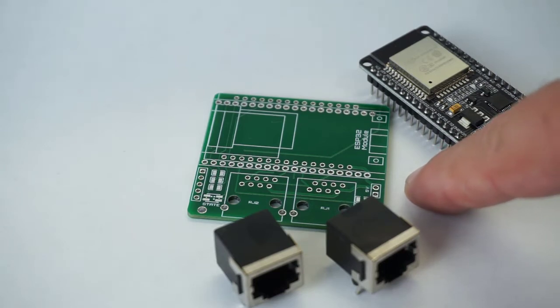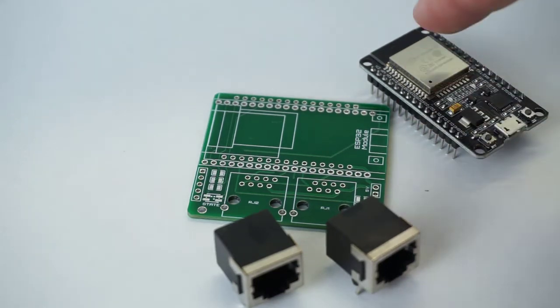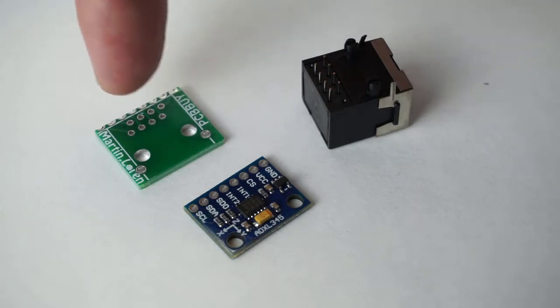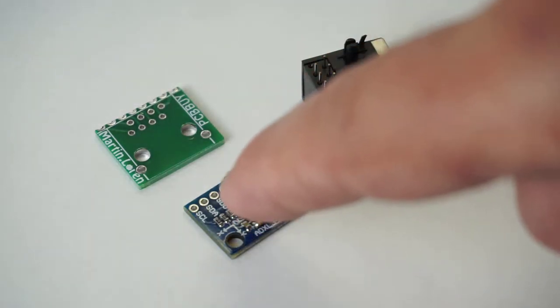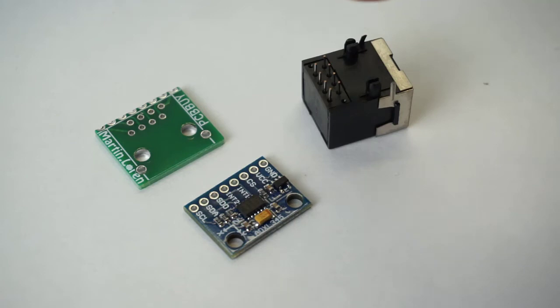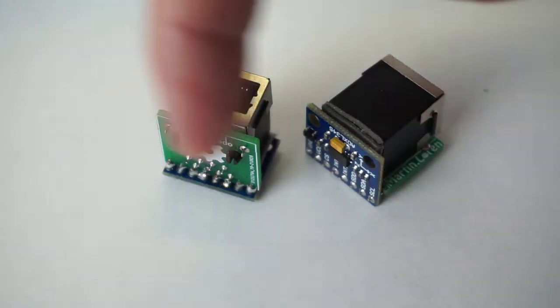Just some straightforward soldering iron work that makes the connections between the ESP32 W room 30 pin board to the RJ45s. And this small PCB helps make the connections between the ADXL 345 accelerometer and the RJ45 connector. So we end up with a couple of these.